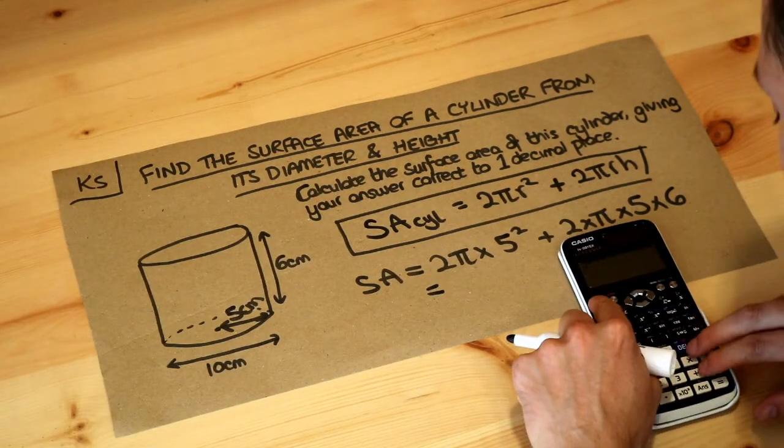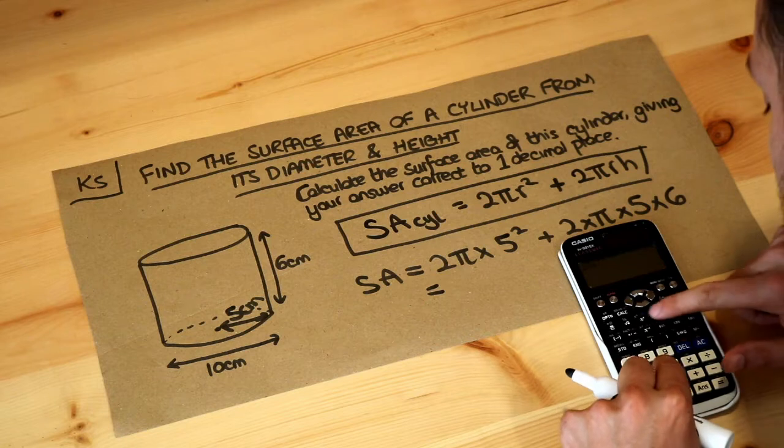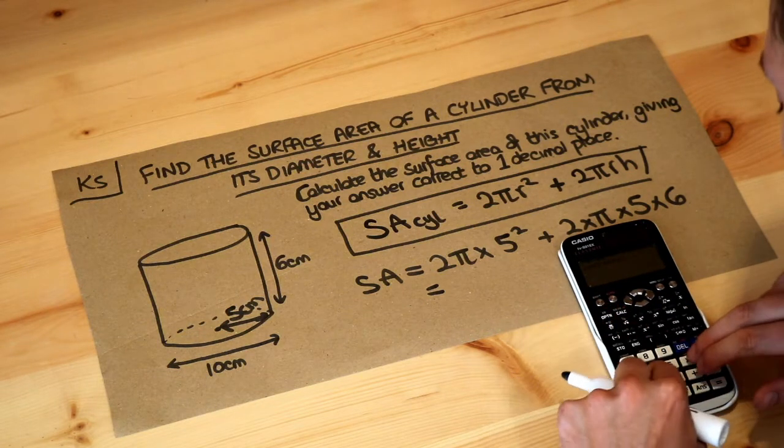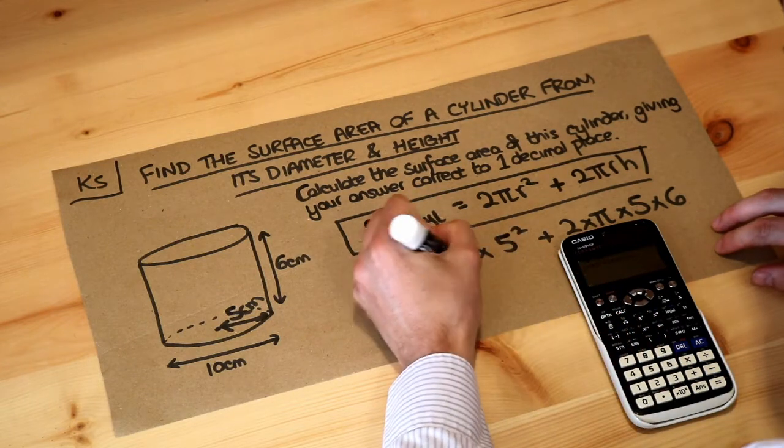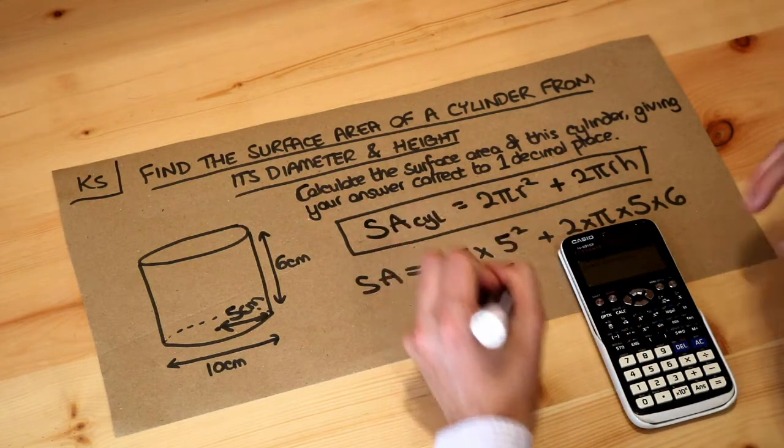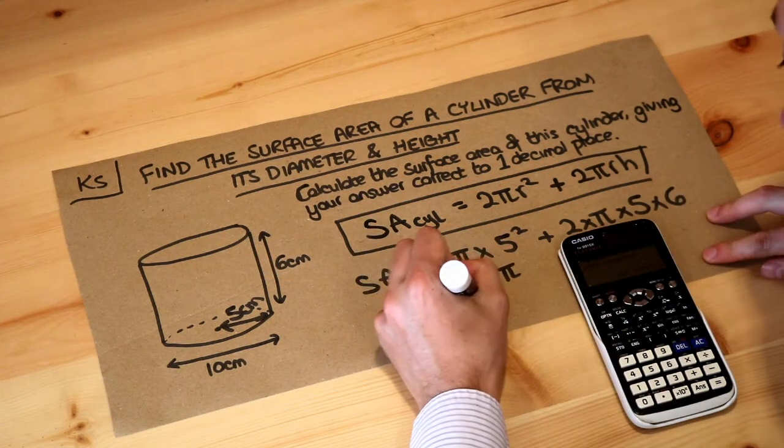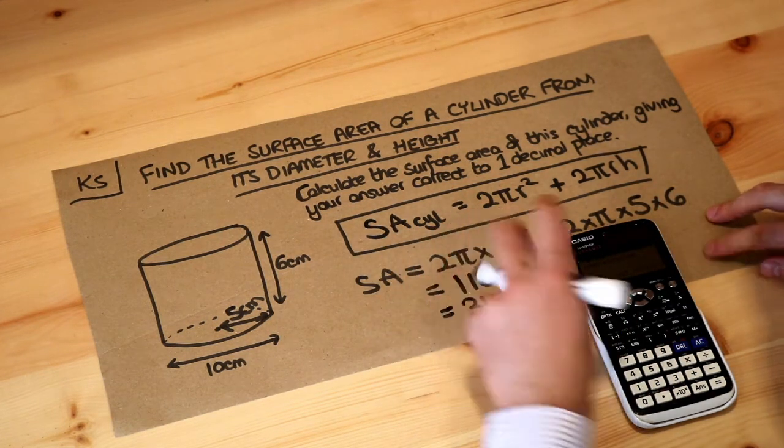So 2 times π, or 2π, times 5 squared, plus 2 times π times 5 times 6. That simplifies it for us to 110π, and then if we press the SD key we get 345.6.